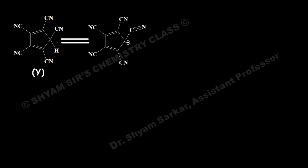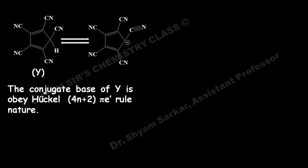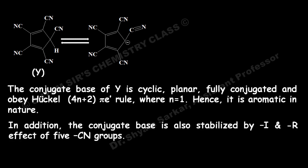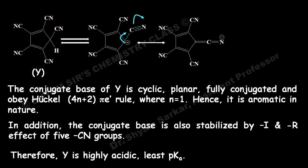For Y, the conjugate base is cyclic, planar, fully conjugated, and obeys Hückel's rule — that is the 4n+2 π electron rule where n=1 — hence it is aromatic in nature. In addition, the conjugate base is also stabilized by the -I and -R effect of five CN groups. Therefore, Y is highly acidic, meaning it will have the least pKa value.